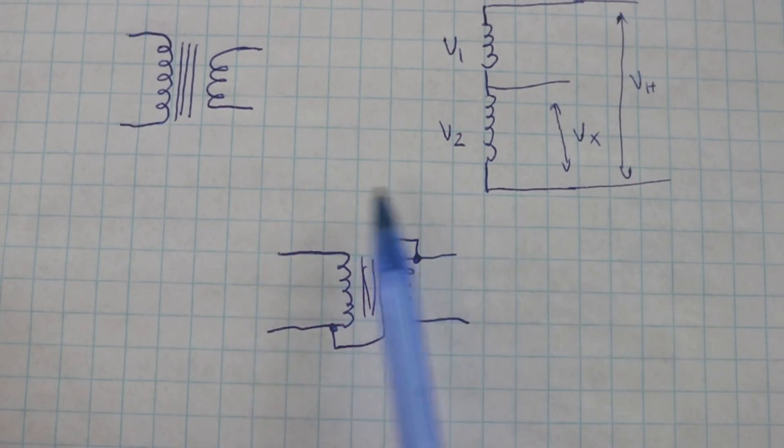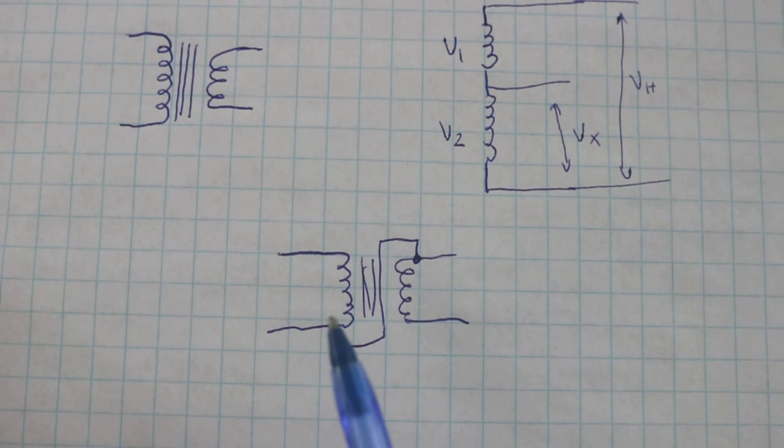Here we can see how to make the connection of the transformer in order for it to work as an autotransformer. We will make a connection between primary and secondary but you can make the connection here or here.